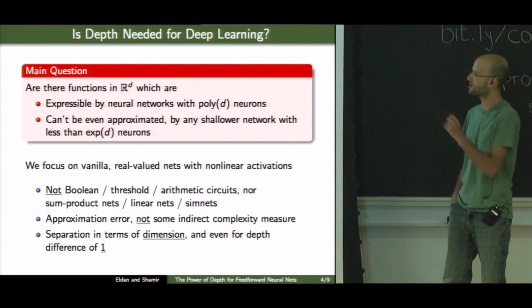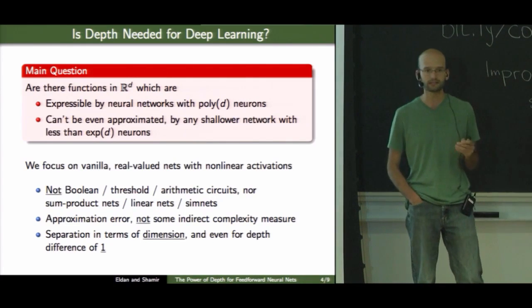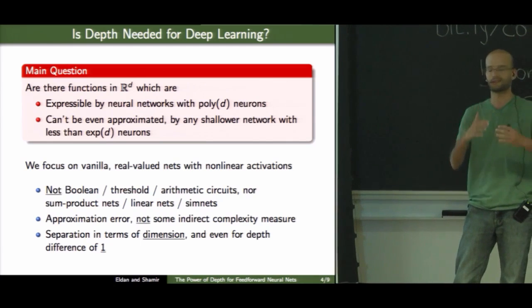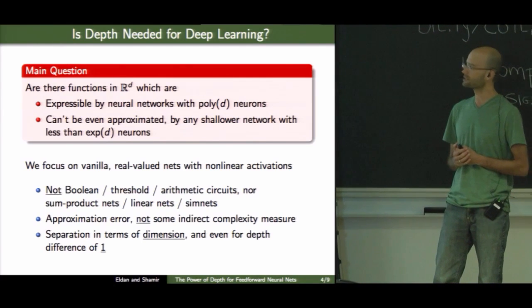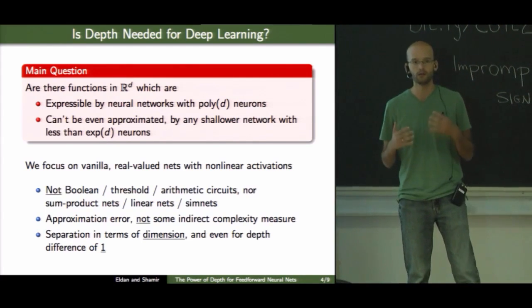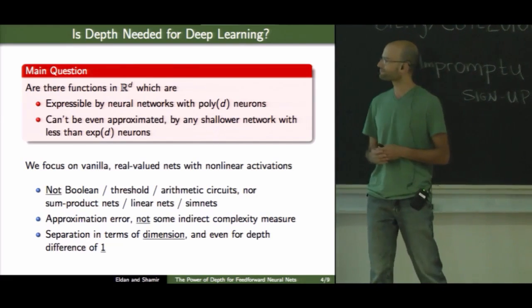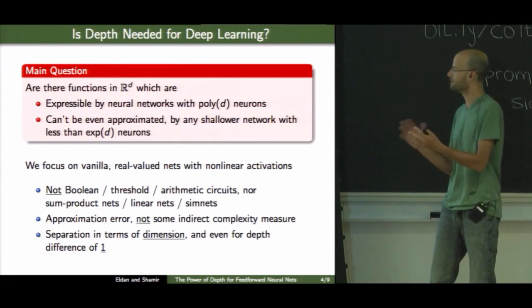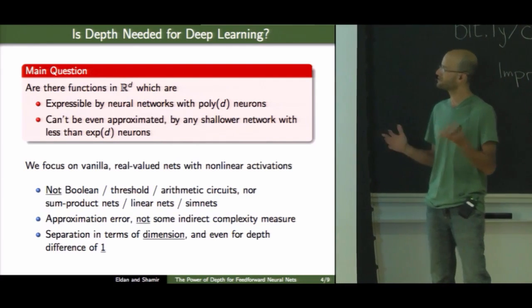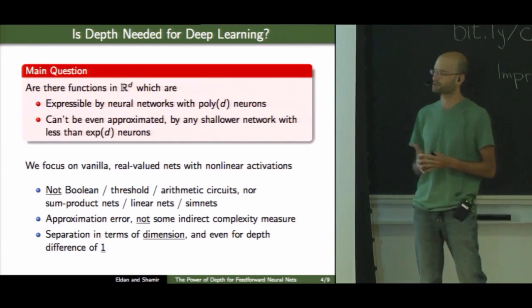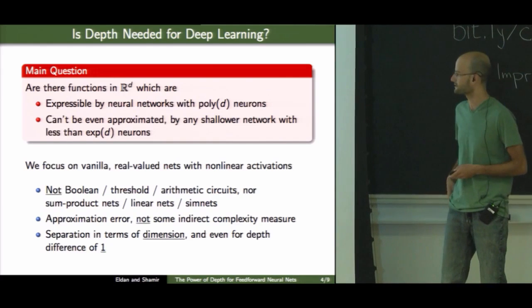For example, this is not about Boolean circuits, where there have been a lot of work about depth separation, but the techniques used there really don't carry through to real value networks, nor things which are not exactly neural networks with non-linearities. So it's not about networks which compute polynomials or things like that.